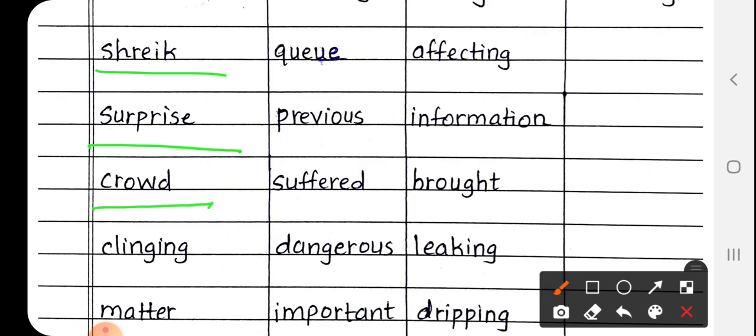Next is crowd, C-R-O-W-D. Crowd means bheed. Next, clinging, C-L-I-N-G-I-N-G. Matlab sakht pakadna. Kisi ko hum tightly pakad ke rakhte hai, to usse kya kehte hai? Sakht pakadna means clinging. C-L-I-N-G-I-N-G, Clinging.